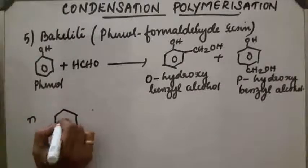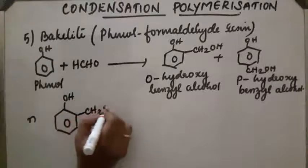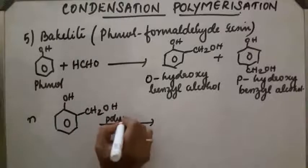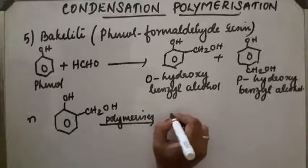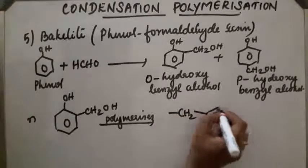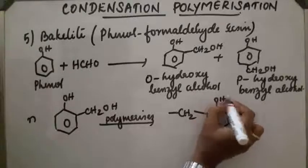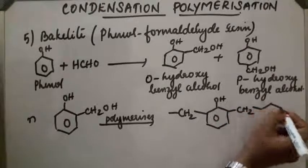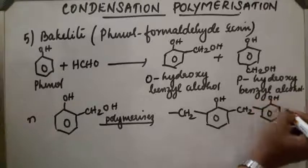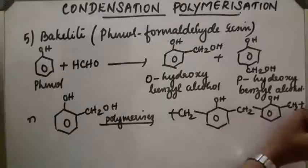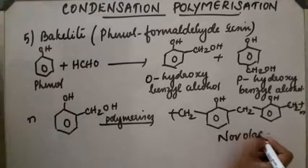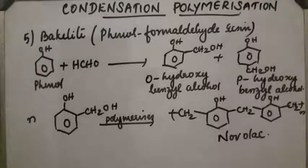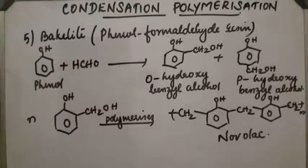This is the initial formation. The CH2OH groups polymerize and form a chain — CH2, then OH, then CH2, repeating N times. This is called novolac and is used in paints. In the next step, these linear polymers are cross-linked when heated with formaldehyde (HCHO), and form Bakelite.